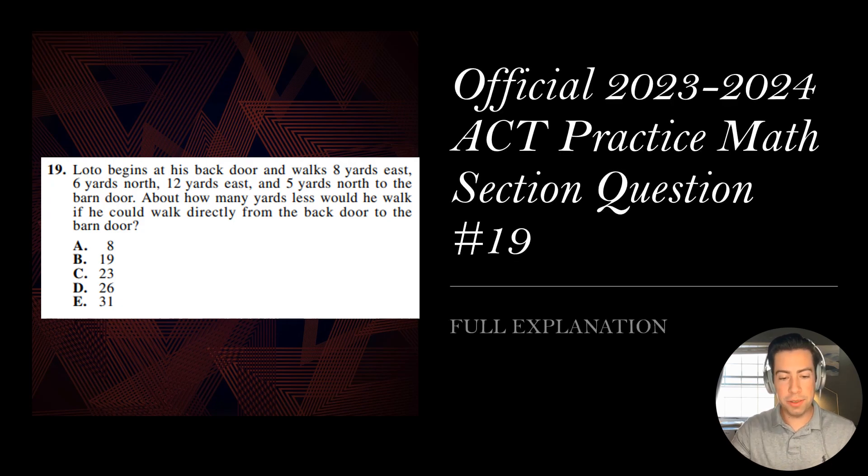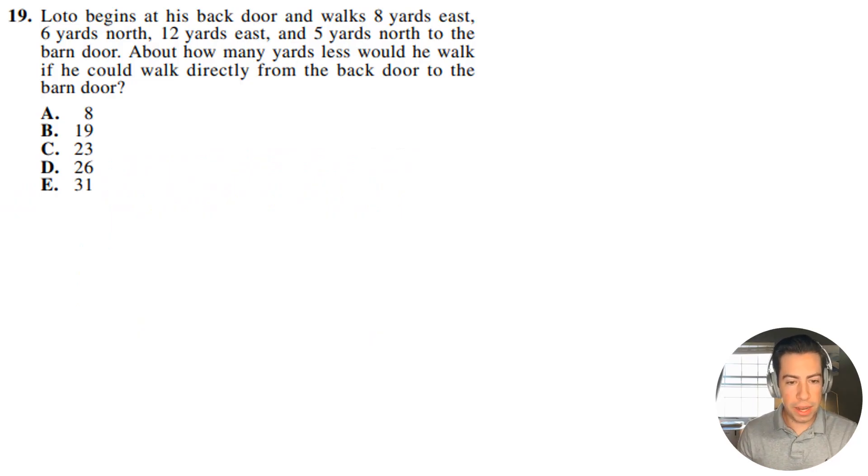All right, question number 19, let's get right into it. So I have Lodo begins at his back door and walks 8 yards east, 6 yards north, 12 yards east, and 5 yards north to the barn door. But how many yards less would he walk if he could walk directly from the back door to the barn door?